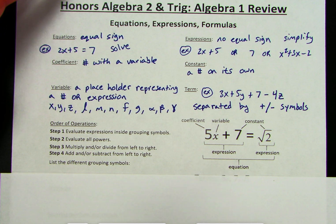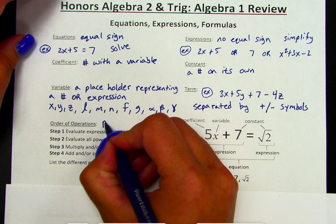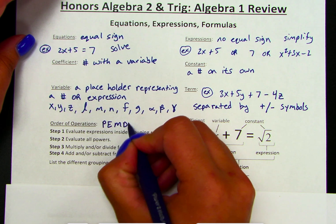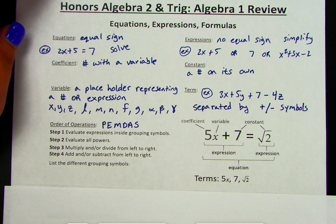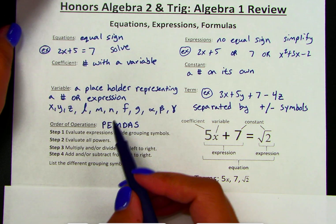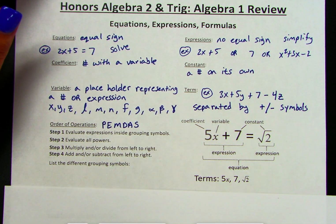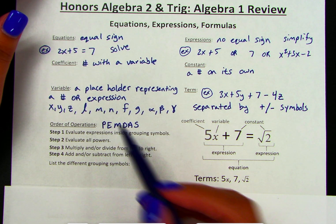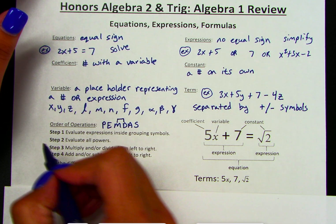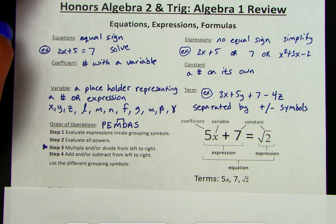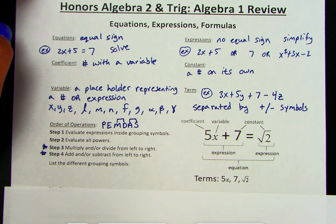As we start getting into simplifying and solving, we need to use our order of operations — PEMDAS, or 'Please Excuse My Dear Aunt Sally.' P is for grouping symbols — we usually say parentheses, but now that we're in Algebra 2 we'll expand on what those grouping symbols are. Next, exponents. Then multiplication and division at the same time from left to right — most people forget that; it doesn't mean multiply everything then divide. And addition and subtraction are also done at the same time from left to right.